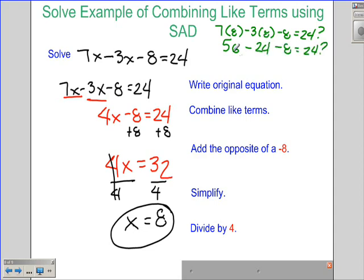So I have 56 minus 24 minus 8. Does that equal 24? Well, 56 minus 24 is 32. So following my order of operations, 32 minus 8 is 24. Does 24 equal 24? Yes.